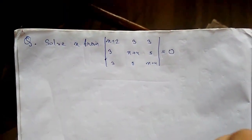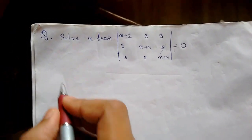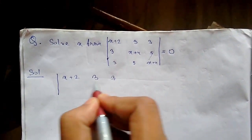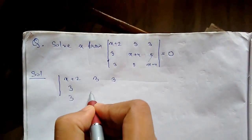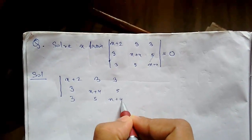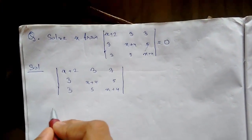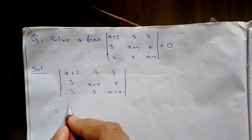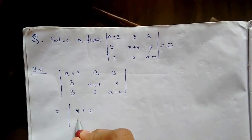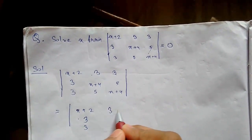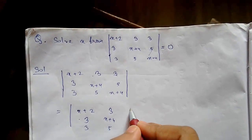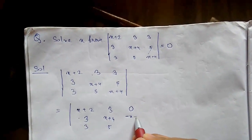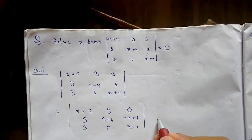Let us see our next problem — we need to solve for x from the determinant. Let me write the question: the matrix entries are x+2, 3, 3 / 3, x+4, 5 / 5, 5, x+4 equals 0.